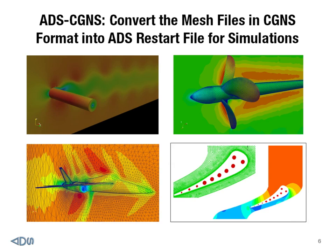We have covered mostly turbomachinery calculations using multi-block structured mesh. Now I want to show some of the applications we applied to Code Leo using unstructured mesh. In this figure, I show four configurations. On the upper left-hand corner is a low-speed calculation for flow past a cylinder — time-accurate, capturing vortex shedding and also doing conjugate heat transfer. The Mach number in this case is 0.01. On the upper right-hand corner is a calculation showing the velocity behind the propellers — a three-bladed propeller.